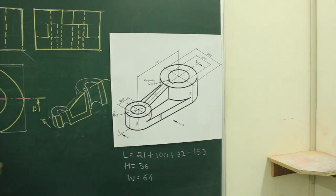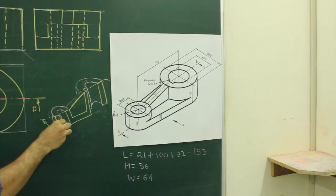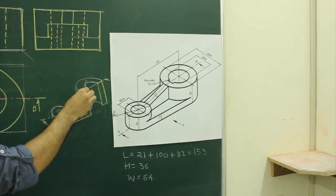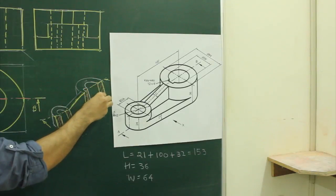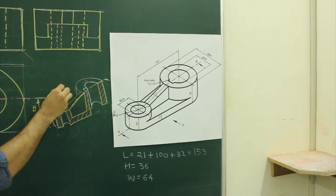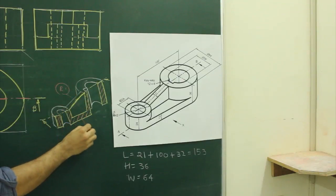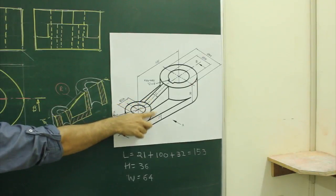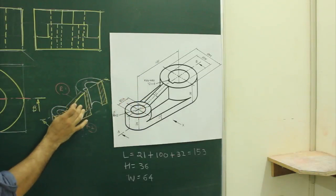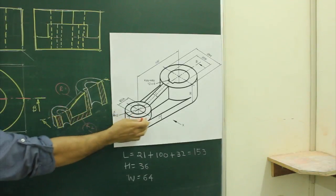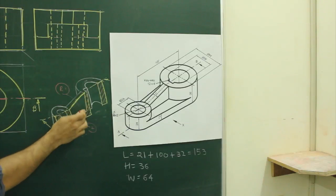When you do hatching, we need to hatch this area. Now see — in this case, there are how many ribs? There are two ribs. Rib 1 is getting cut parallel, and rib 2 is getting cut perpendicular. When you cut like this, you are cutting rib 1 parallel, so we are not showing any hatching for that. But rib 2 is getting cut perpendicular, so we need to show hatching for that.